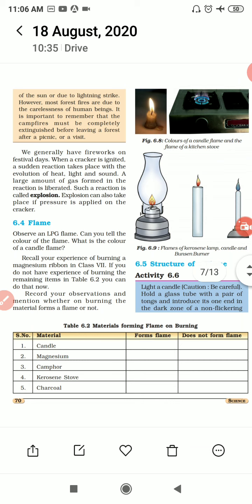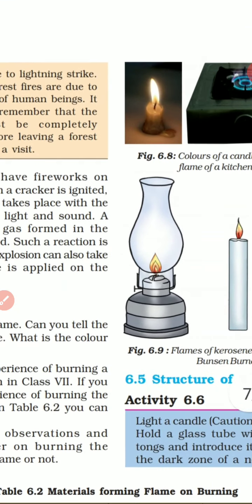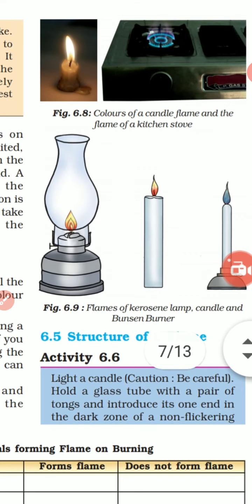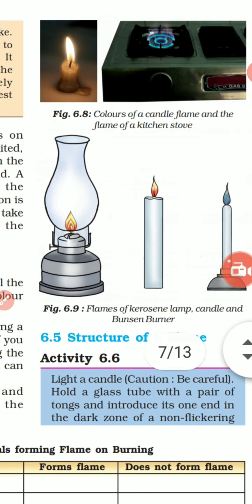Now, observe the flames of different objects and you will see a change of color. You can see the color of a candle flame and the flame of a kitchen stove — one is yellow-orange, one is blue. In figure 6.9 you can see the flame of a kerosene lamp, a candle, and a Bunsen burner. Their colors are different.